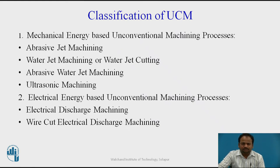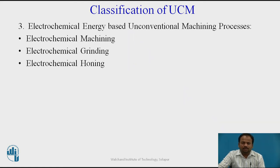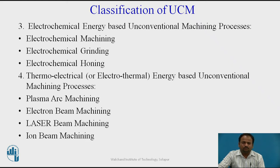The next category is electrical energy based processes. Here the medium is electrical current — electrical discharge machining (EDM), where current is used to machine the workpiece, and wire cut electro discharge machining, where a wire acts as the tool. Next is electrochemical energy based processes, including electrochemical machining, electrochemical grinding, and electrochemical honing. The fourth category is thermoelectrical, which combines thermal and electrical energy — including plasma arc machining, electron beam machining, laser beam machining, and ion beam machining.